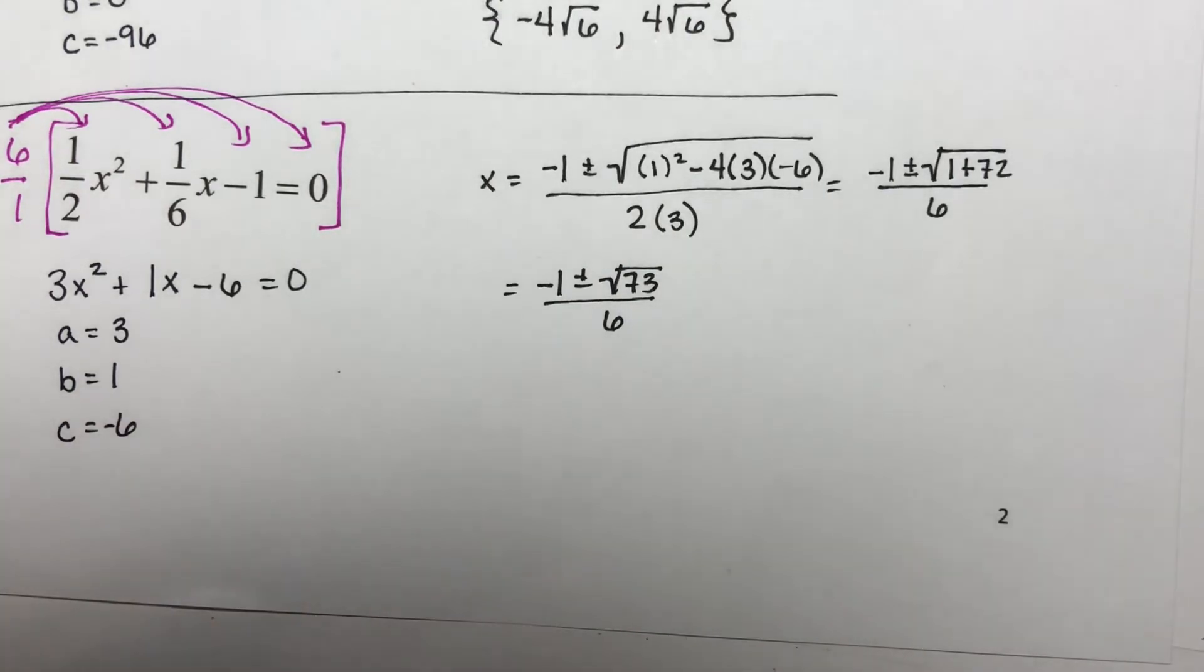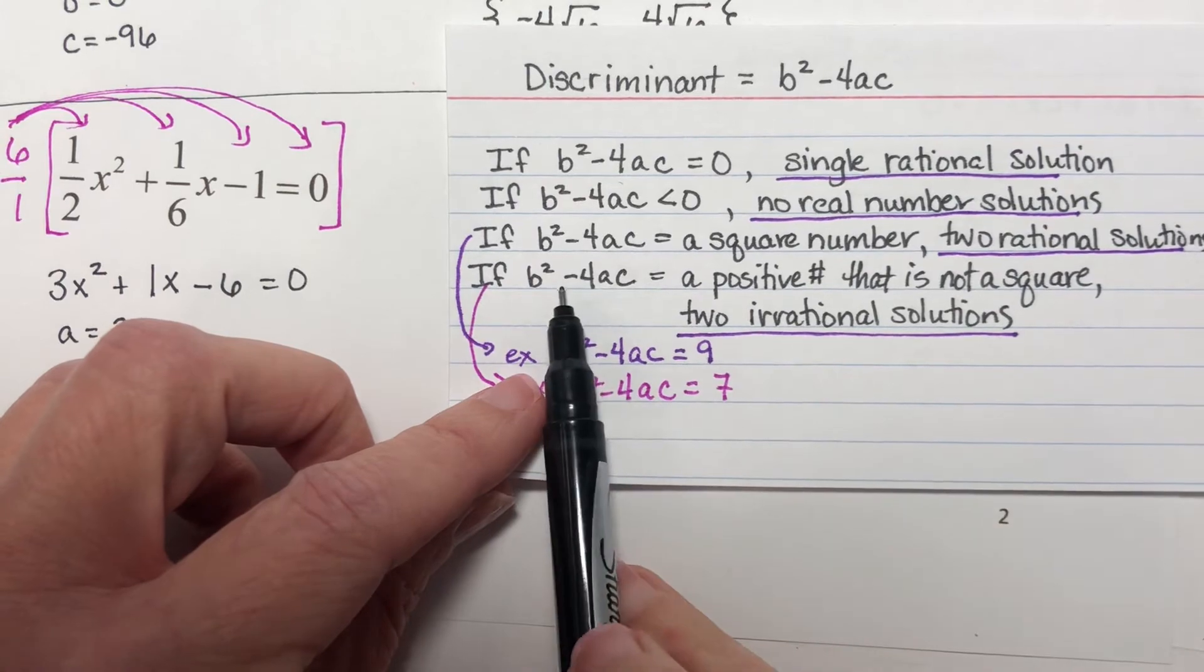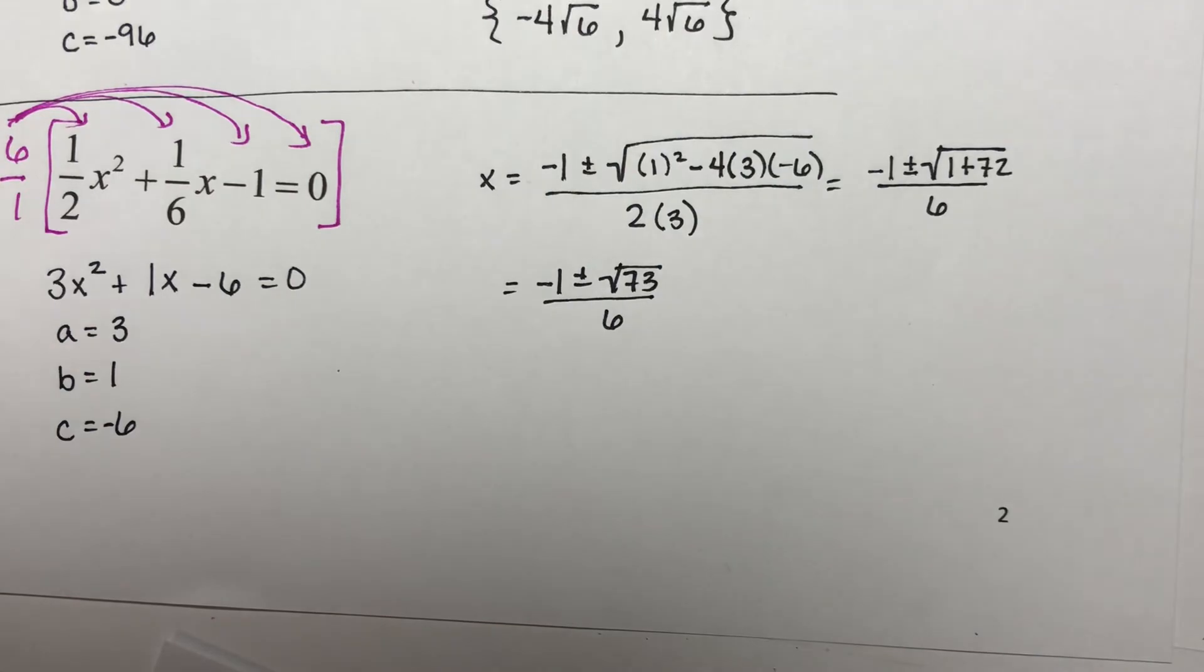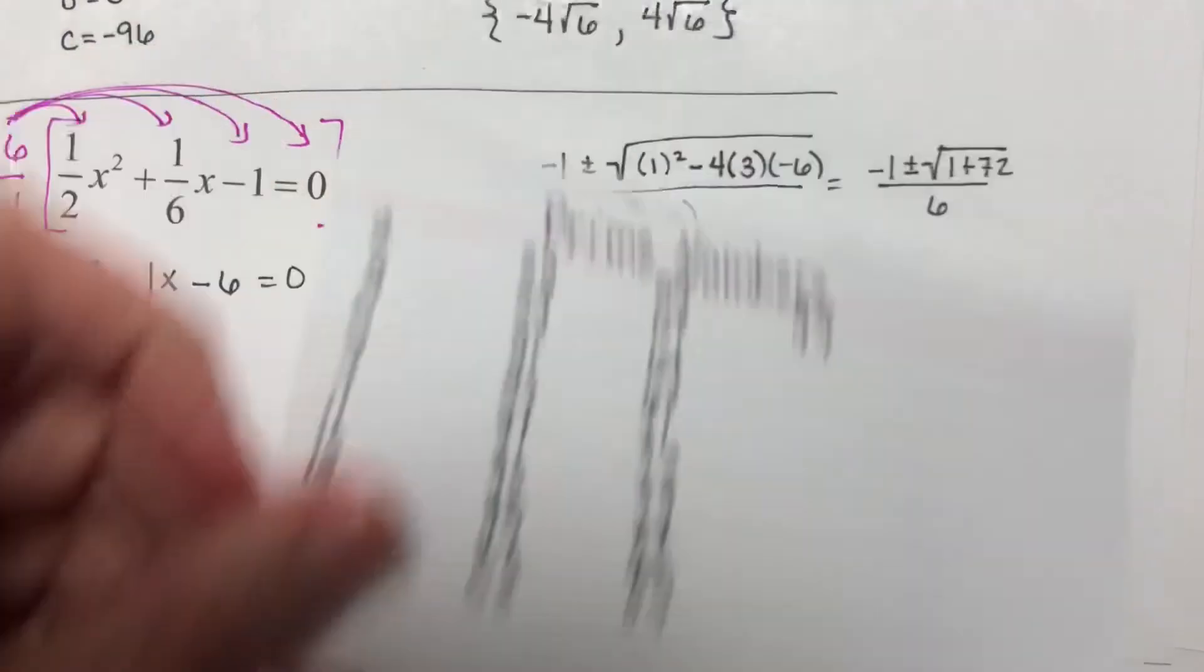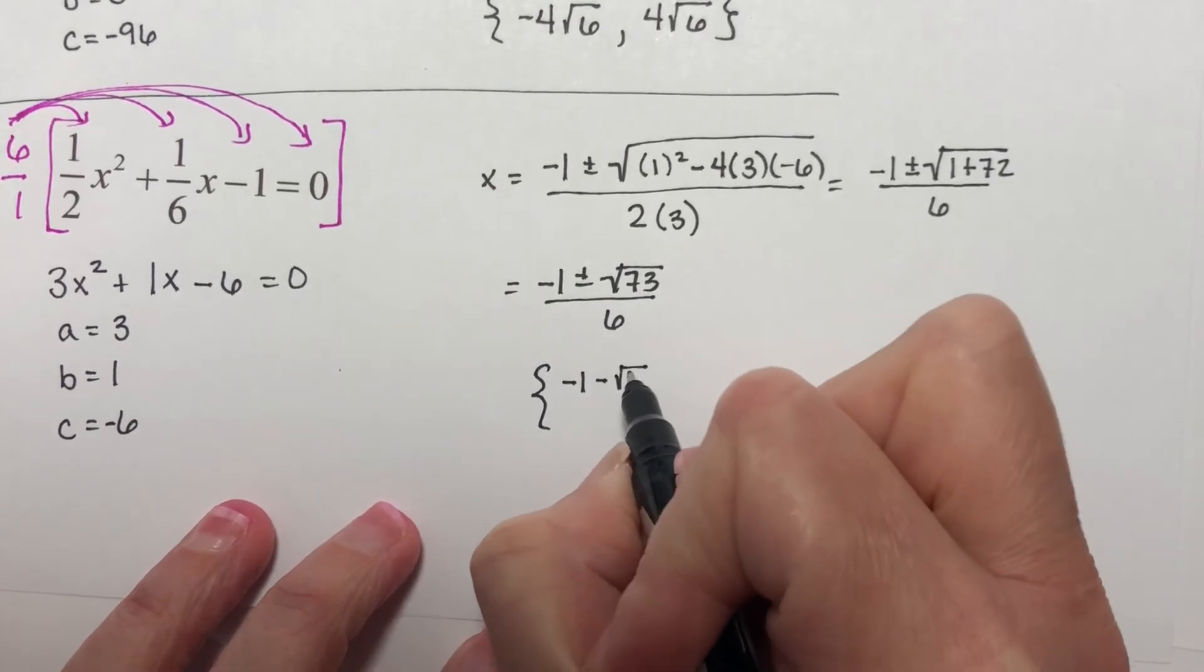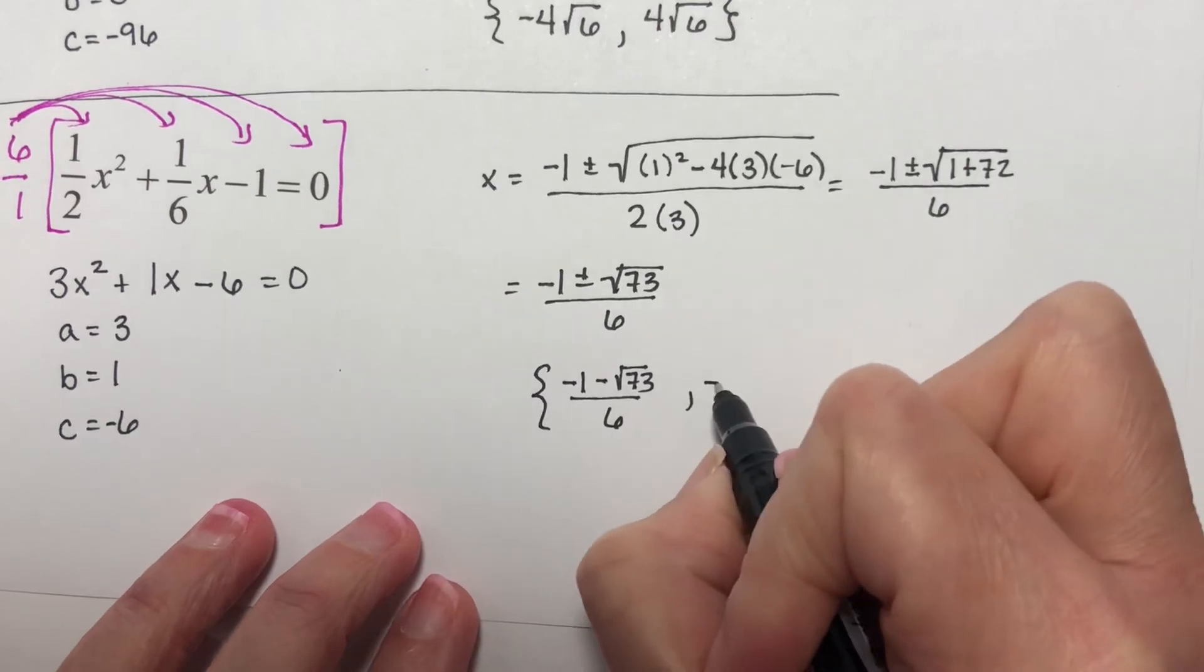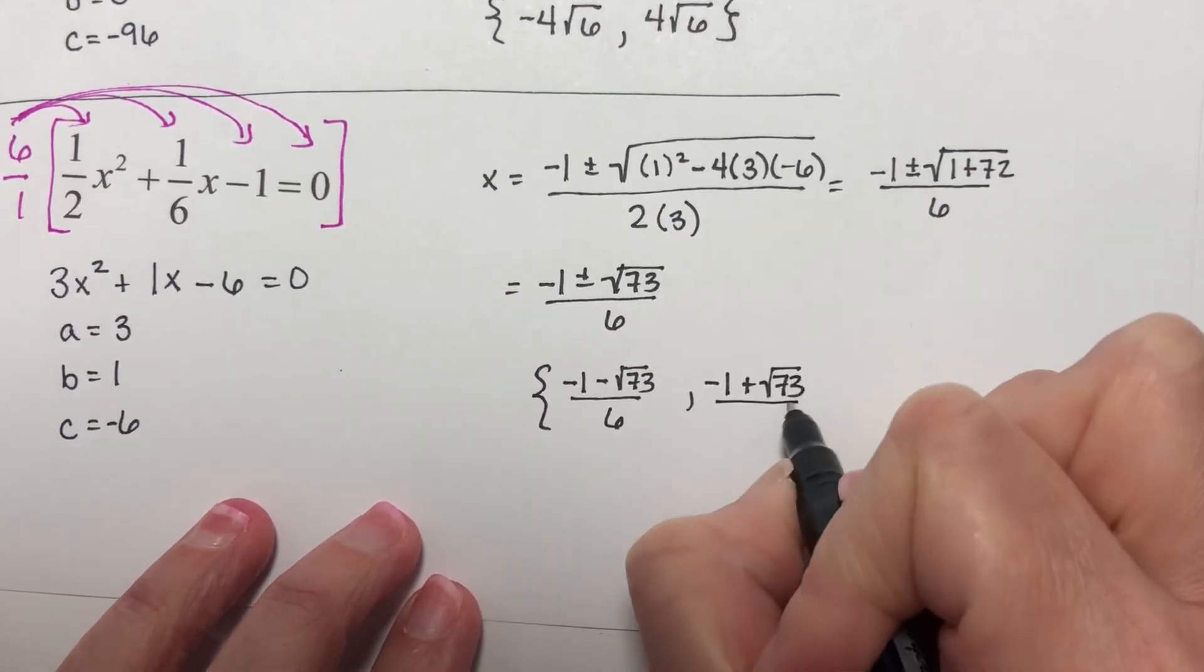Well, 73 is a positive number that is not a perfect square, so I expect to get two irrational solutions. I need to see if I can simplify the square root of 73. Well, 73 is one of our prime numbers, so that does not simplify. Your two solutions are negative 1 minus the square root of 73 over 6, and negative 1 plus the square root of 73 over 6.